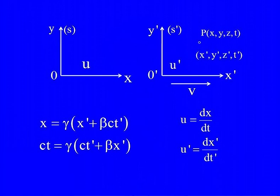Having seen that, let us now look at how velocities are added in these two frames. What is the Einsteinian velocity addition formula according to Lorentz transformations? The Galilean velocity addition law we have already done. Let's now derive the relativistic version.